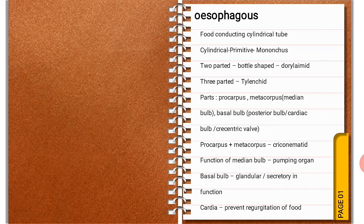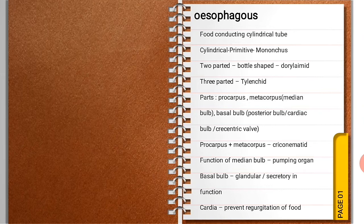The median bulb is a pumping organ. The basal bulb, as it is glandular in nature, is secretory in function. Also important to note is the valve named cardia. Generally, the esophagus opens into the intestine where there is a valve called cardia, which is the esophago-intestinal valve. It prevents regurgitation of food and controls the passage of food from the esophagus into the intestine.